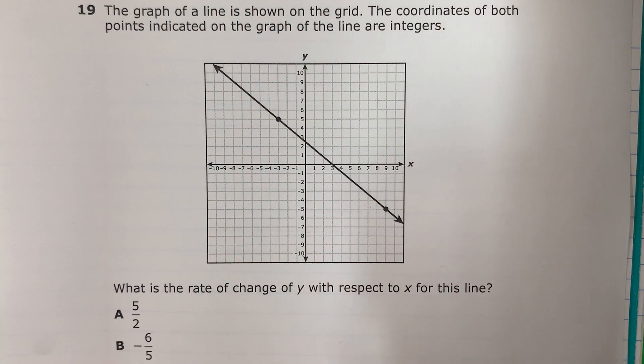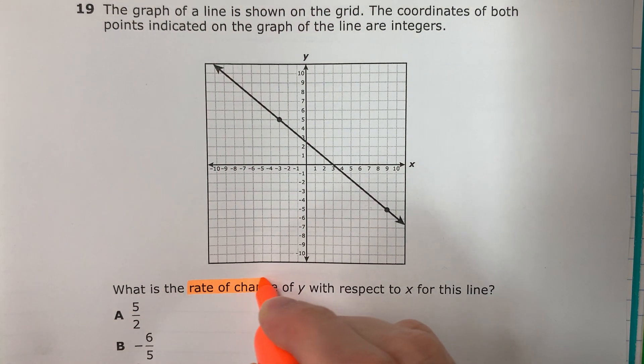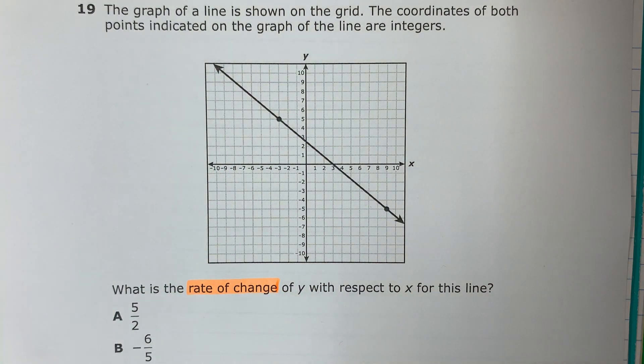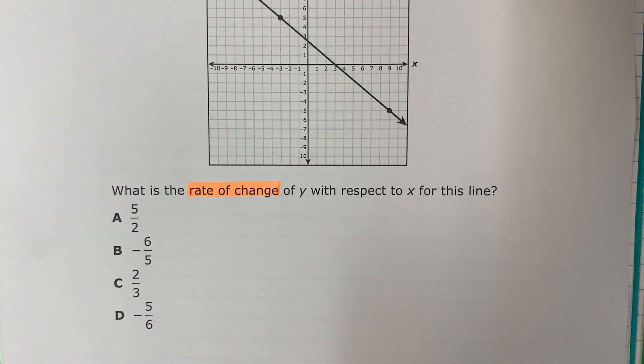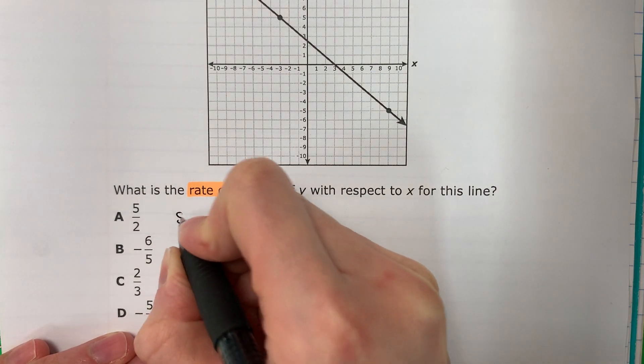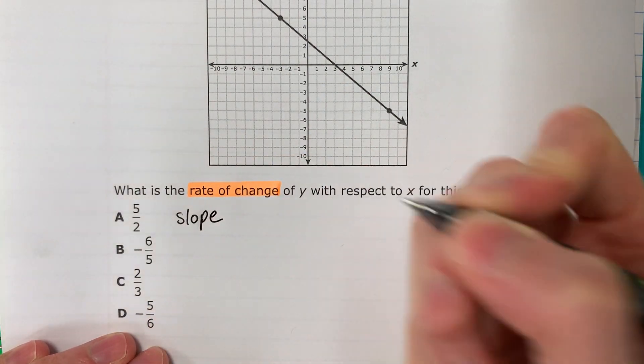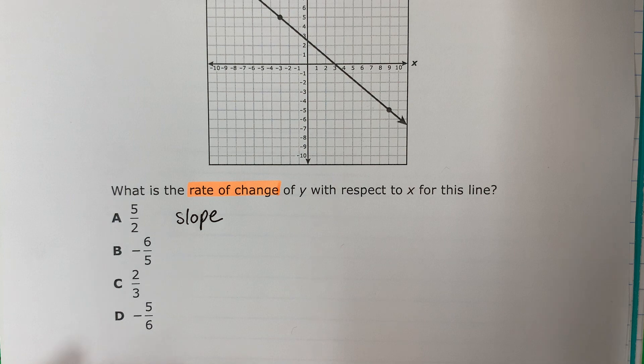Okay, so what you need to understand here is rate of change. What is another word for rate of change? Slope. And what letter is slope? M.